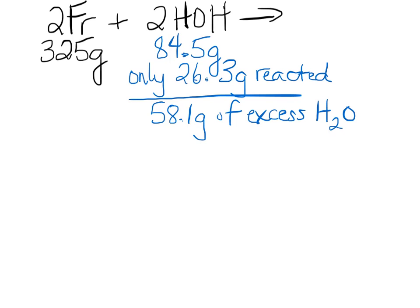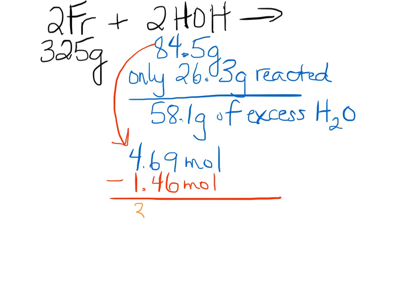We could also do the excess in moles. We know that there is originally 4.69 moles of water available—that number corresponds directly to this available amount to react. We know that we only reacted 1.46 moles, and so we know that there are 3.23 moles of excess water.